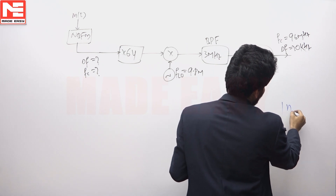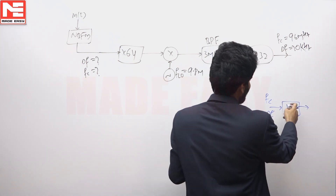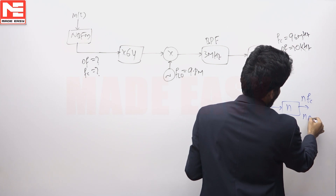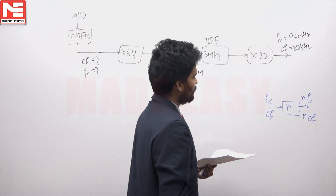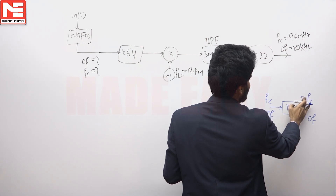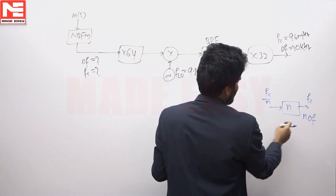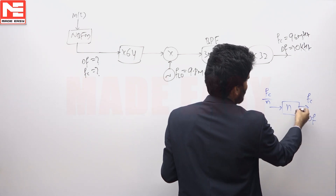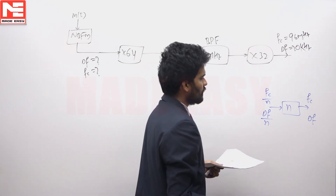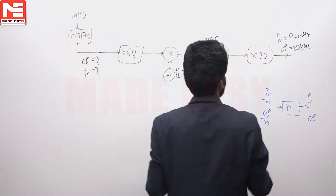For a frequency multiplier with multiplying constant n, if the input has carrier frequency fc and frequency deviation delta f, then at the output the carrier frequency becomes n·fc and frequency deviation becomes n·delta f. Conversely, if the output frequency is fc, the input is fc/n, and if output deviation is delta f, the input deviation is delta f/n. The multiplying constant n is always an integer.